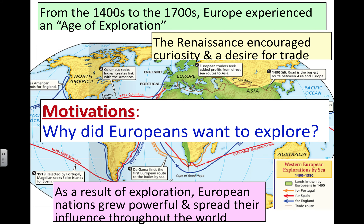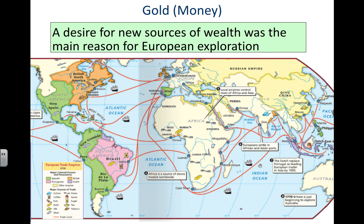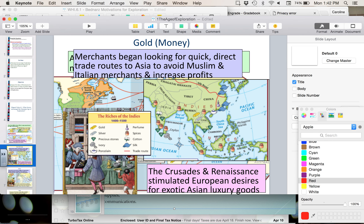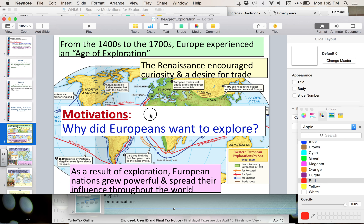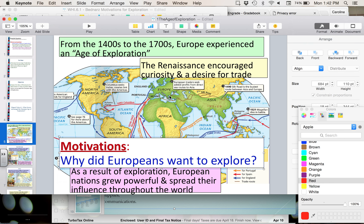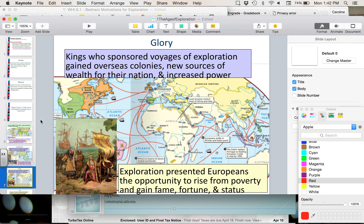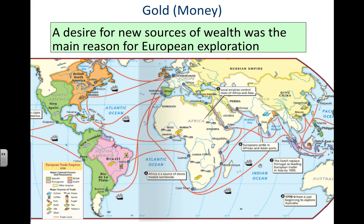Why did Europeans want to explore? The first reason was gold — more specifically, just generally money. This desire for new sources of wealth was the main reason for European exploration. The city of Constantinople, located at the corner of the Black Sea separating Turkey and Asia from Europe, was key — the desire to gain gold really took off when Constantinople fell to the Ottoman Turks. Europeans had been exposed to the goods of Asia and really wanted them, but the only thing Asia would trade for their silks and tea was gold.